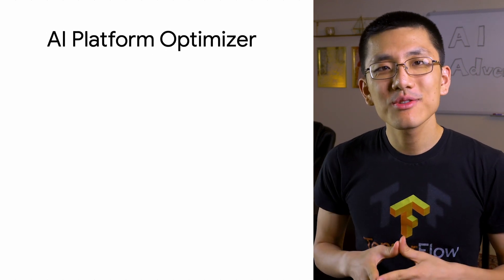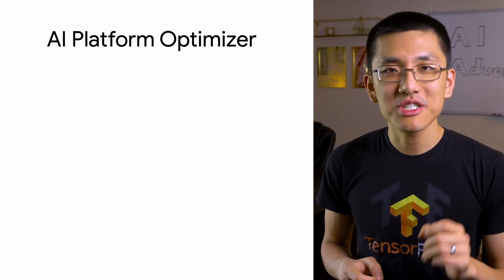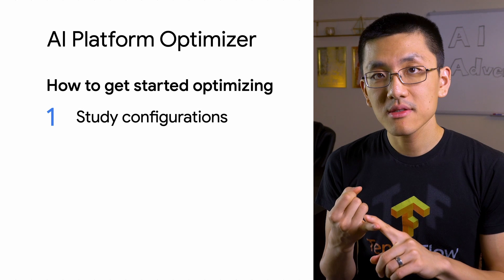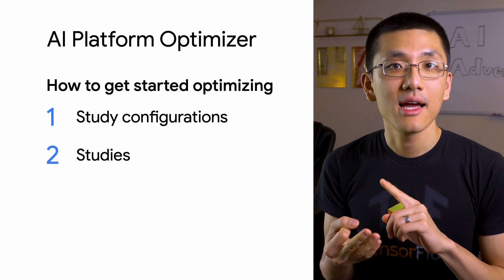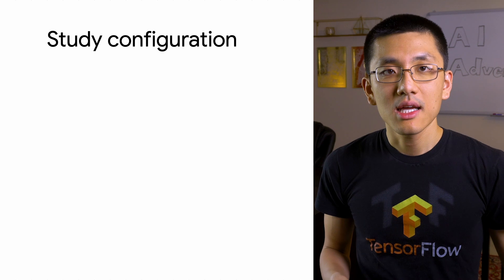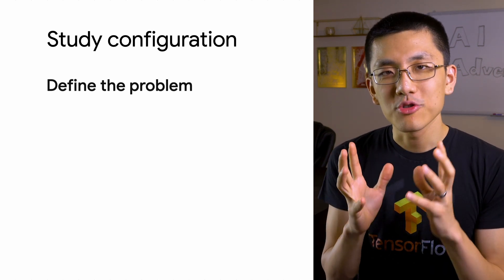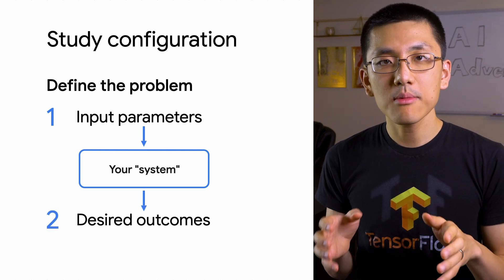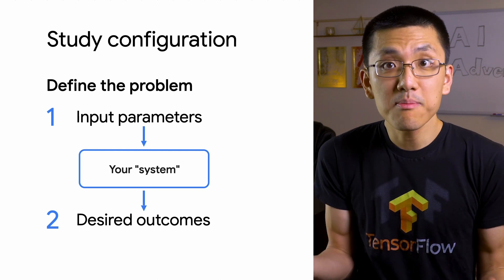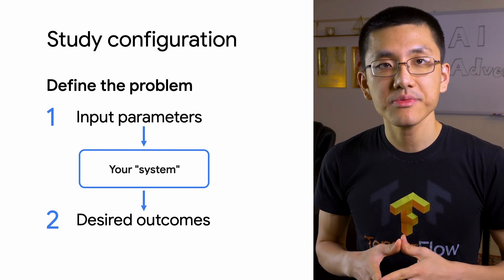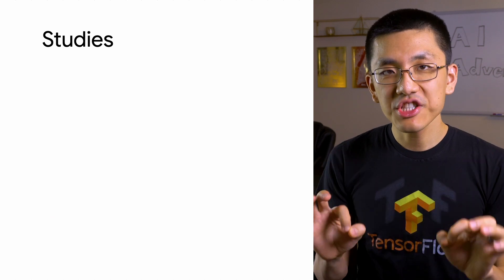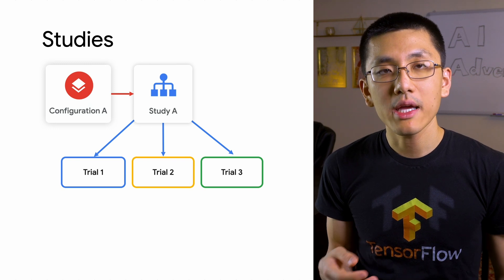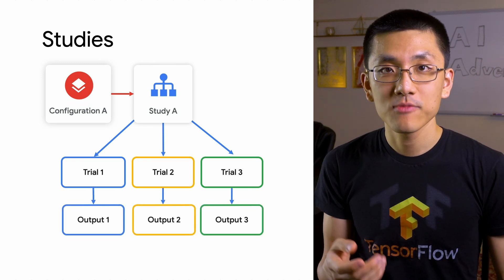Let's talk about how to use AI Platform Optimizer to optimize your machine learning model or other function. There are three terms we need to understand: study configurations, studies, and trials. A study configuration is the definition of the optimization problem you're trying to solve — it includes the result you would like to optimize, as well as the parameters that affect that result, which are basically the inputs being optimized. A study is the implementation of a study configuration, and it uses its configuration's goal and input parameters to conduct experiments, or trials.